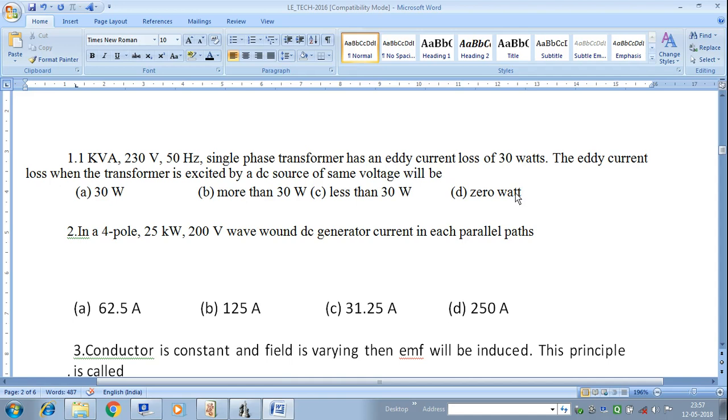The correct answer is zero watts because when a DC source of same voltage is supplied, the transformer cannot operate on DC source. Because we already know that the transformer winding is purely inductive, that is, ideally we can say it is a pure inductive circuit.